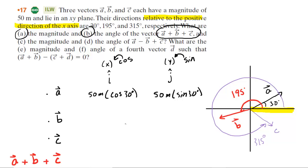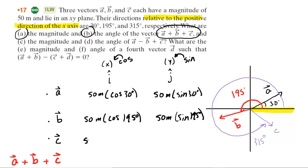For vector B, same idea — take the magnitude and multiply it by the cosine of the given angle for vector B. Then for the y-component, take the magnitude and multiply it by the sine of the given angle for vector B. Same for vector C: take 50 meters and multiply it by the cosine of 315 degrees, and then take 50 meters and multiply it by the sine of 315 degrees.